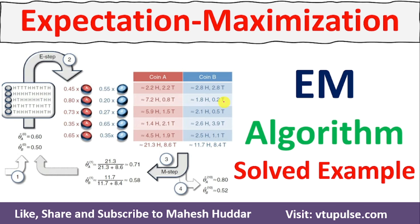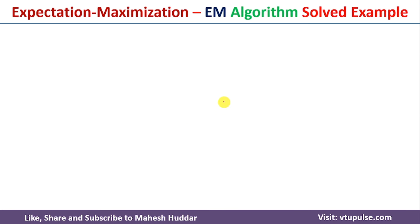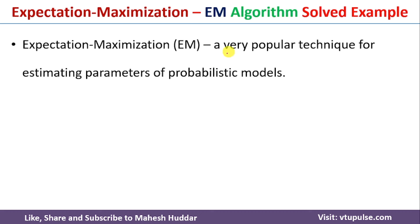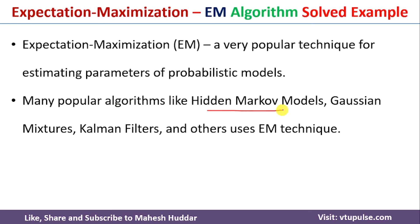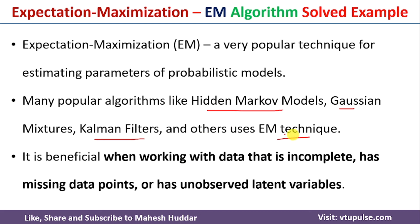Hi, welcome back. In this video, I will discuss the expectation maximization algorithm in machine learning with a simple solved example. The EM algorithm is a popular technique for estimating the parameters of probabilistic models. Many popular models like hidden Markov models, Gaussian mixtures, and Kalman filters use the EM technique. It is beneficial whenever we are working with data that is incomplete or has some missing data points. In the previous video, I discussed the EM algorithm in detail — the link is given in the description below.